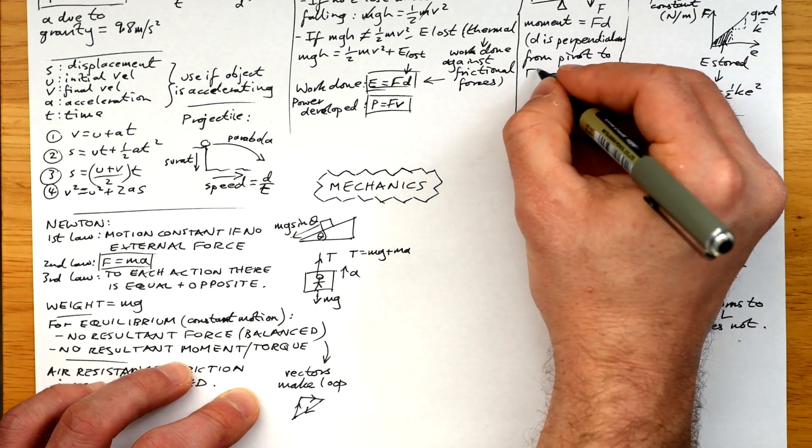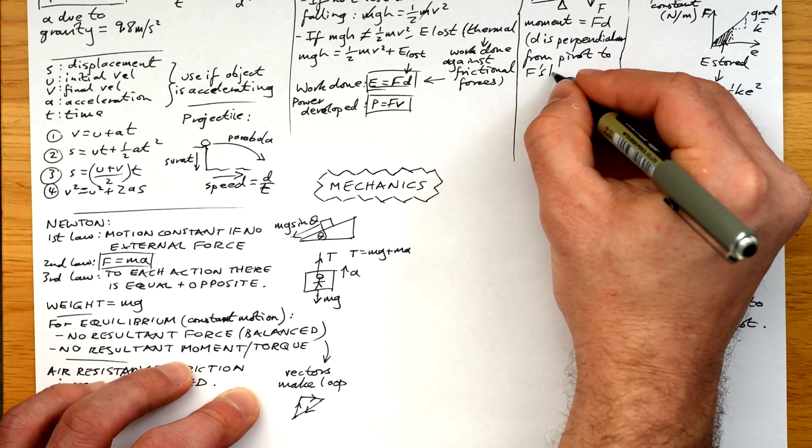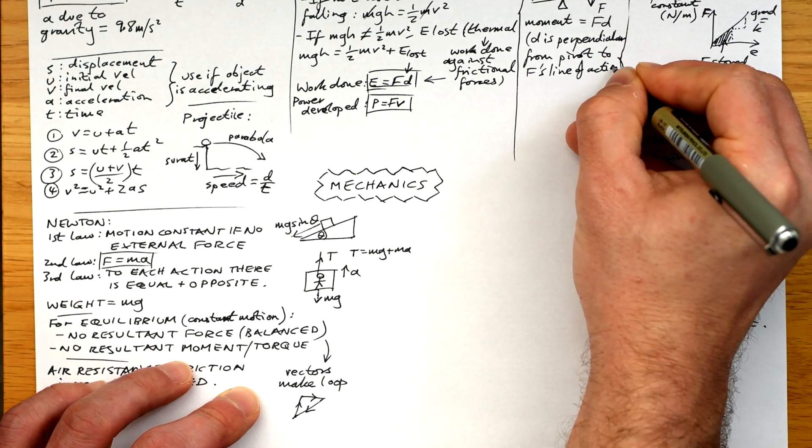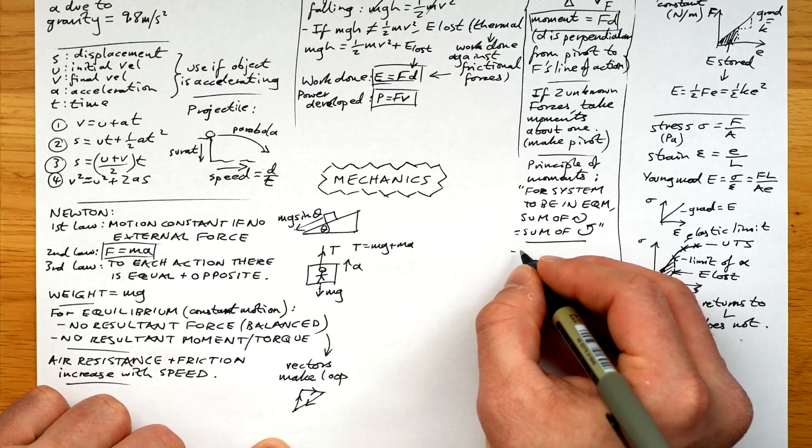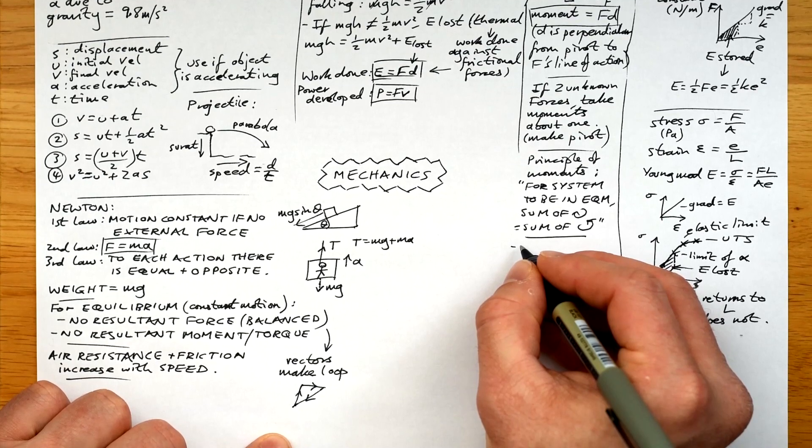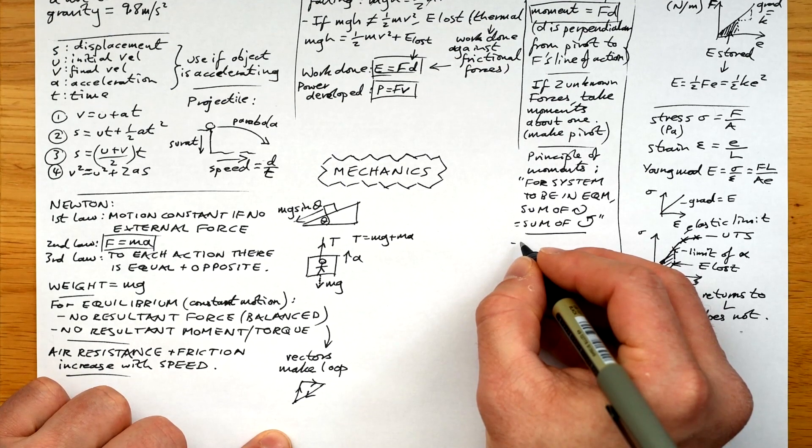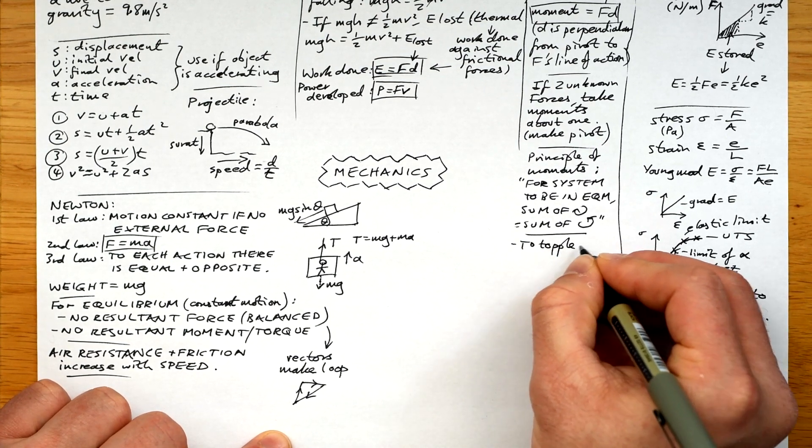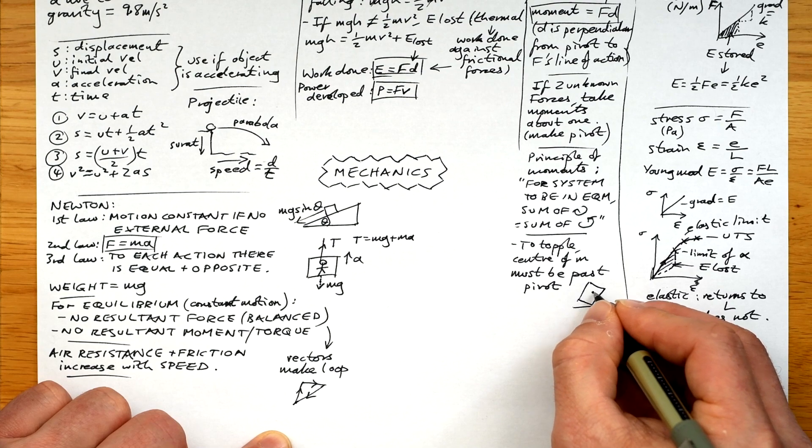Okay, moments. We know that moment is equal to force times distance. Don't forget that our definition is force times distance perpendicular from pivot to force's line of action. So we might have to times by cos theta. If there are two unknown forces in the diagram, then you take moments about one, or in other words, make it a pivot to remove it from the equation, as it were. And then you can find out the other. The principle of moments is that for a system to be in equilibrium, the sum of the clockwise moments must equal the sum of the anti-clockwise moments. And we know there has to be no resultant force for complete equilibrium.